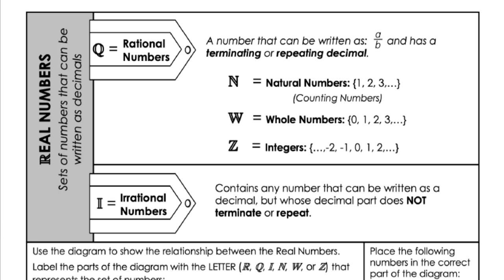The real numbers are the sets of numbers that can be written as decimals. We're going to start with rational numbers, and rational numbers we use the letter Q to represent. A rational number is a number that can be written as a over b, and its decimal version is terminating or repeating — so the decimal ends at some point, like 1.25, or the decimal repeats, like 1.333 ongoing.